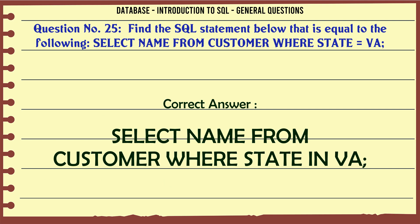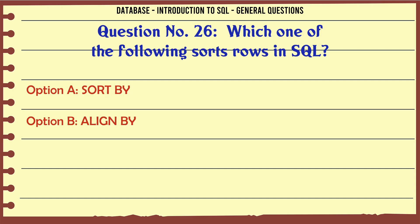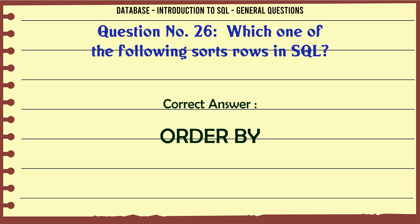Which one of the following sorts rows in SQL? A. Sort by. B. Align by. C. Order by. D. Group by. The correct answer is: Order by.